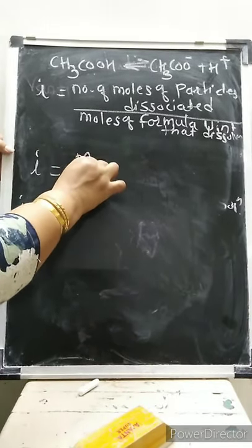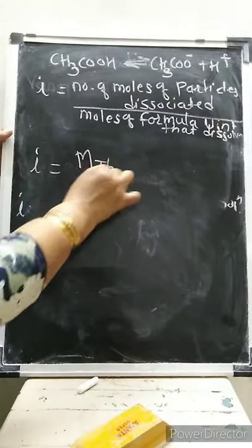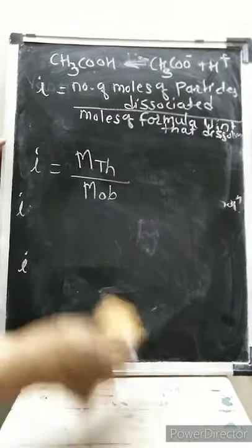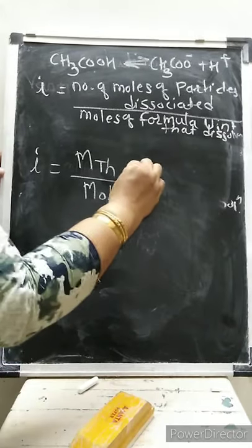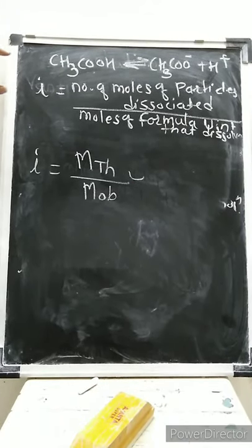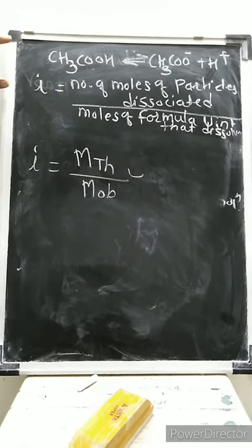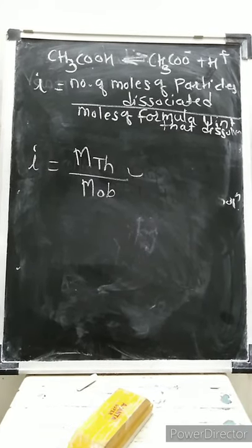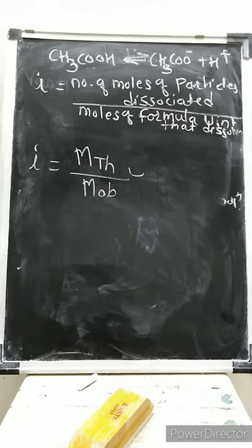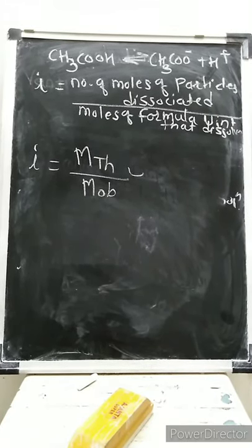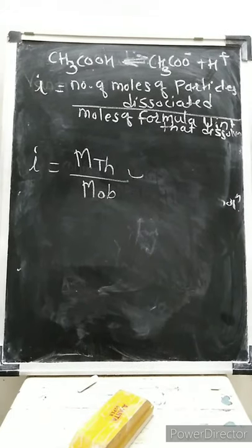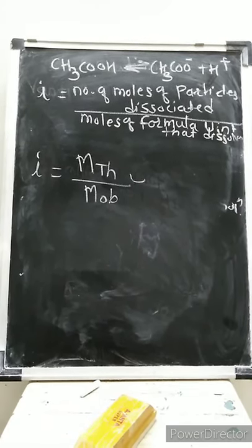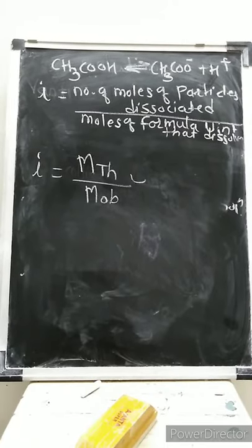The Van't Hoff factor is also related to molar mass. i = theoretical molecular mass / observed molecular mass. By using this formula we can find out the molecular mass, how many moles are dissociated and how many are not, and the relation between i and the colligative properties of electrolyte and non-electrolyte.